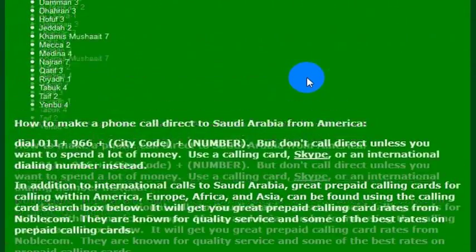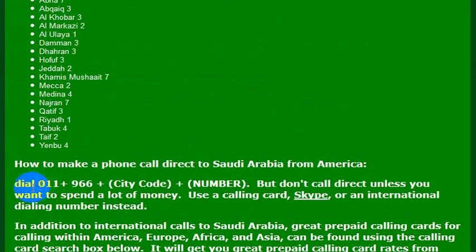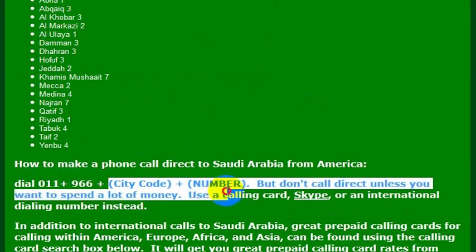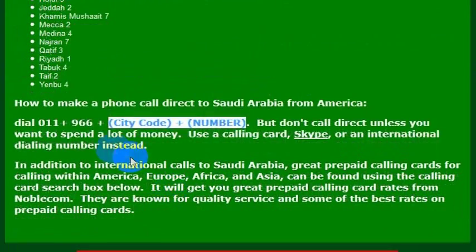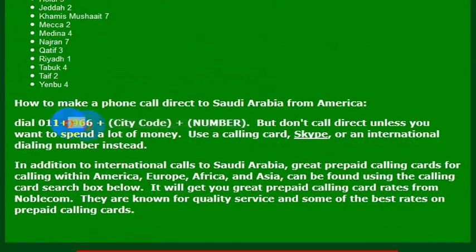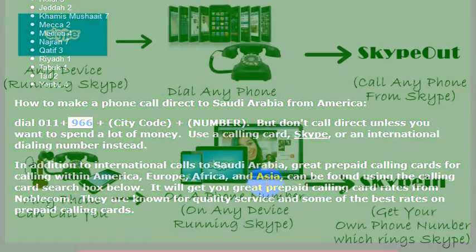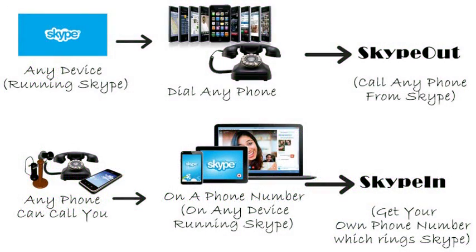So if I'm calling from the United States, I would dial 011, then the country code of 966, and then the phone number that I was trying to reach. I would dial 966 to reach Saudi Arabia.